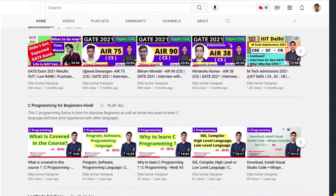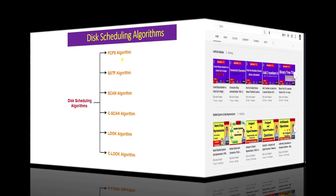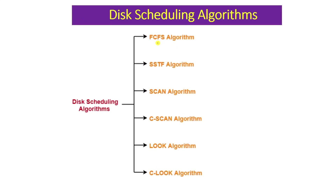In the previous video we discussed the First Come First Serve algorithm and also saw its implementation with the help of a C program. If you haven't seen that video, please watch it - you can find the link in the operating system playlist in the video description below. Now in this video we will understand the second disk scheduling algorithm.